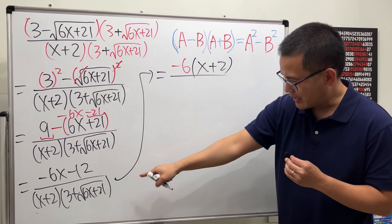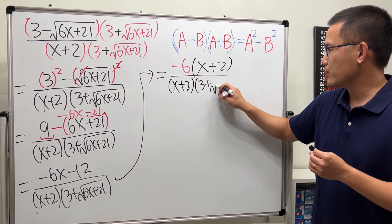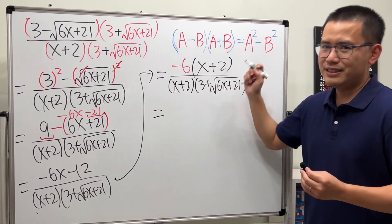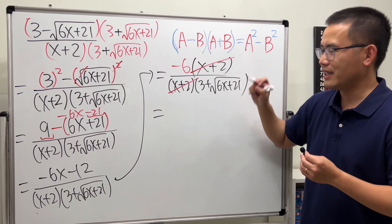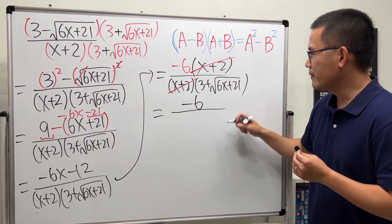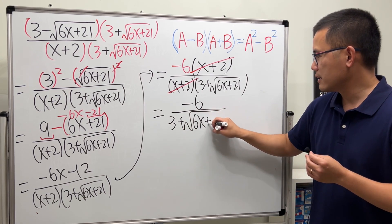And then write that down one more time. So x plus 2, 3 plus square root of 6x plus 21. And then as you can see, the x plus 2, x plus 2 cancel. So finally we just have negative 6 over, and we have 3 plus square root of 6x plus 21.